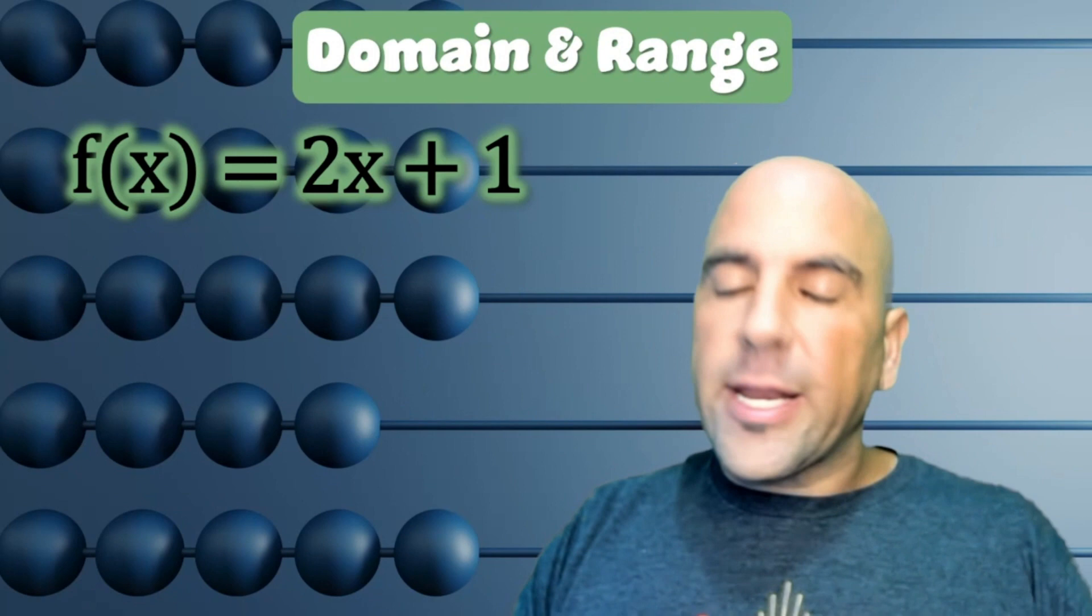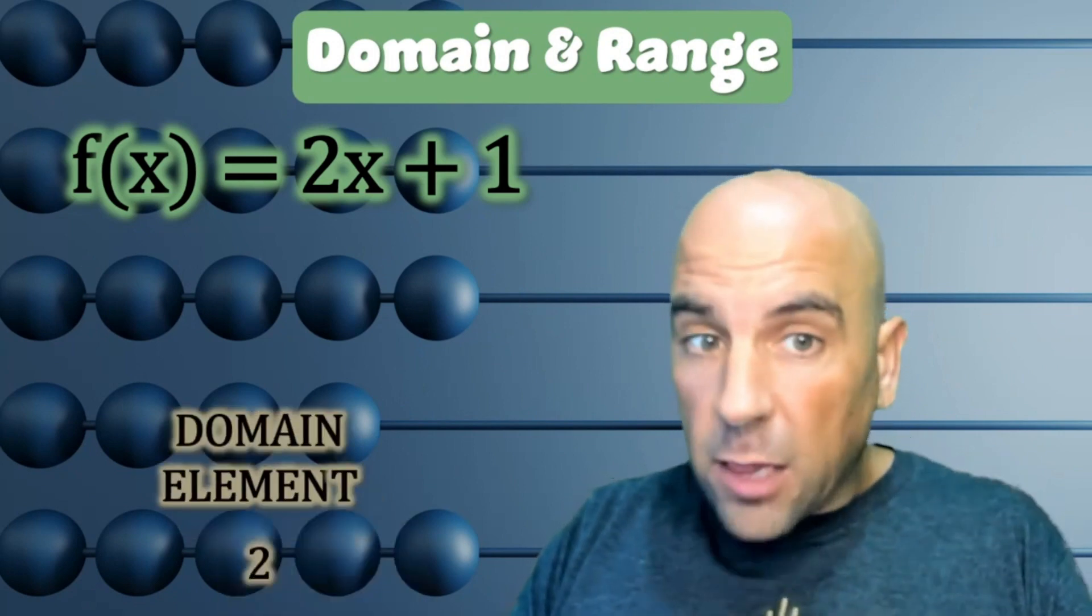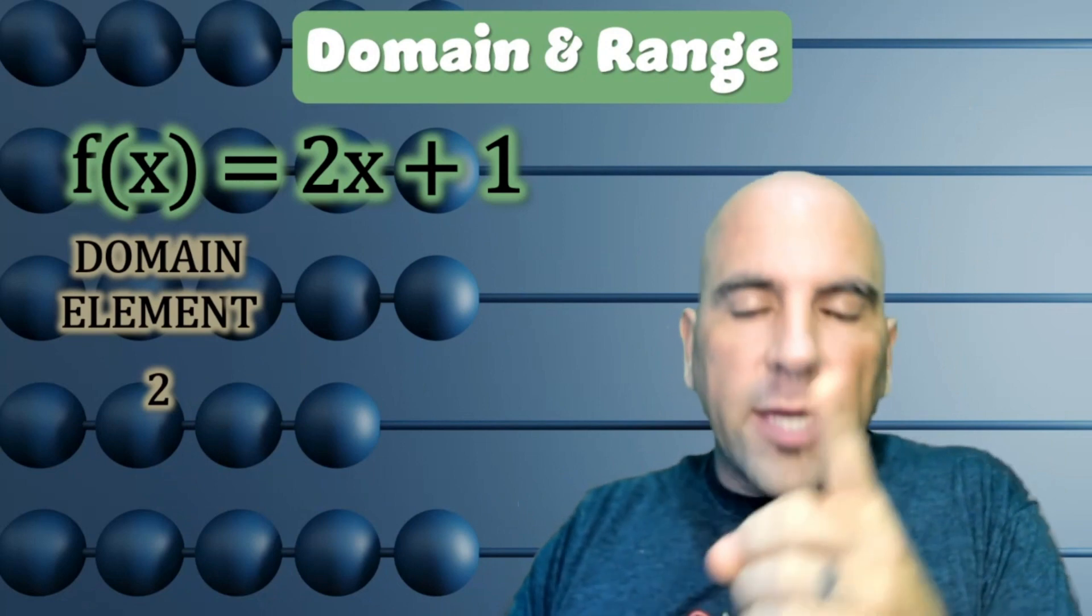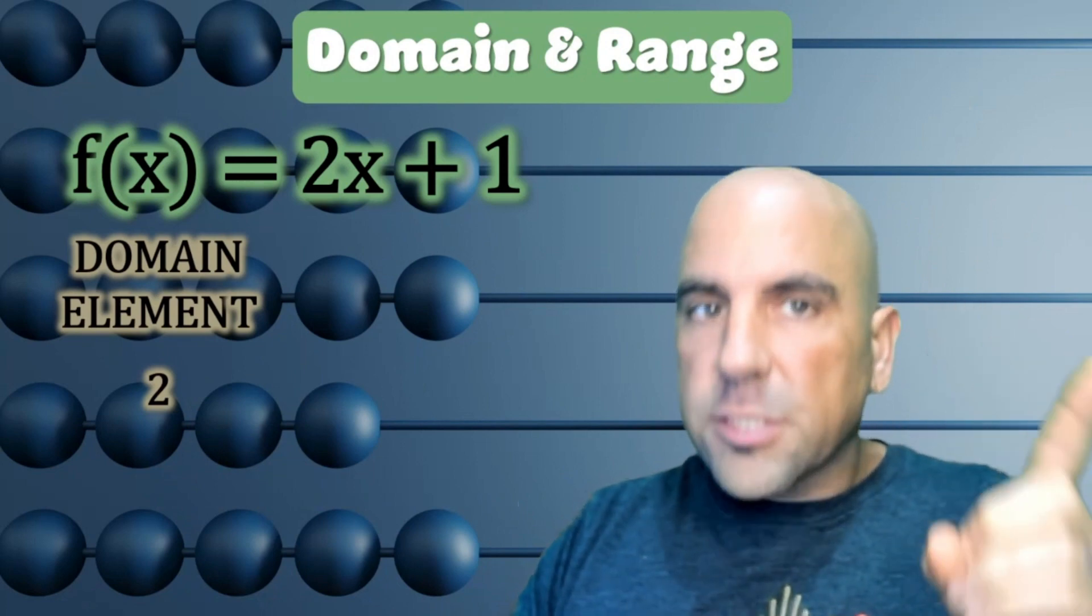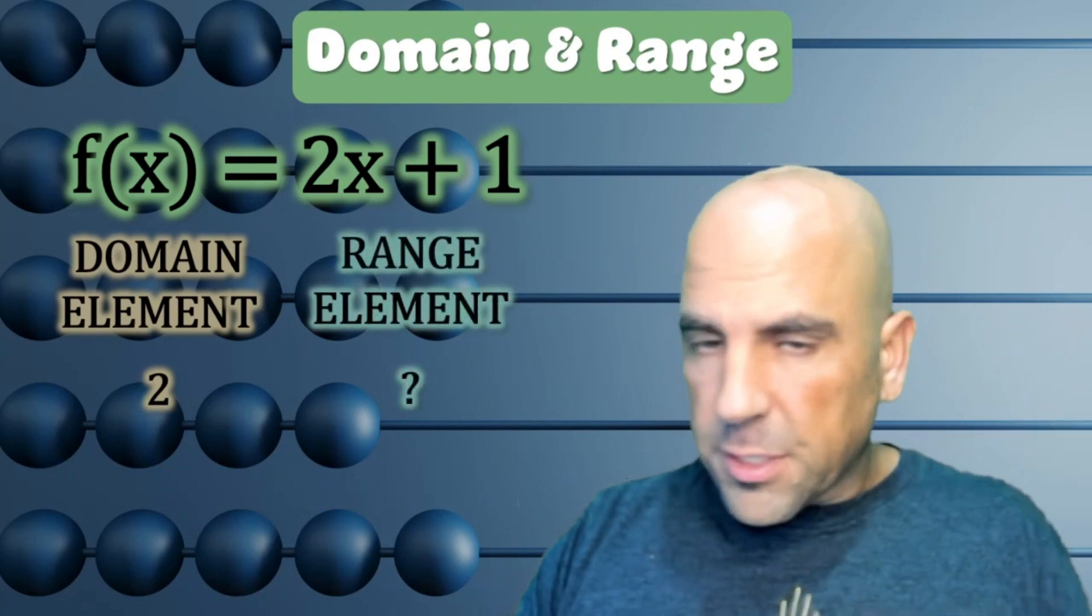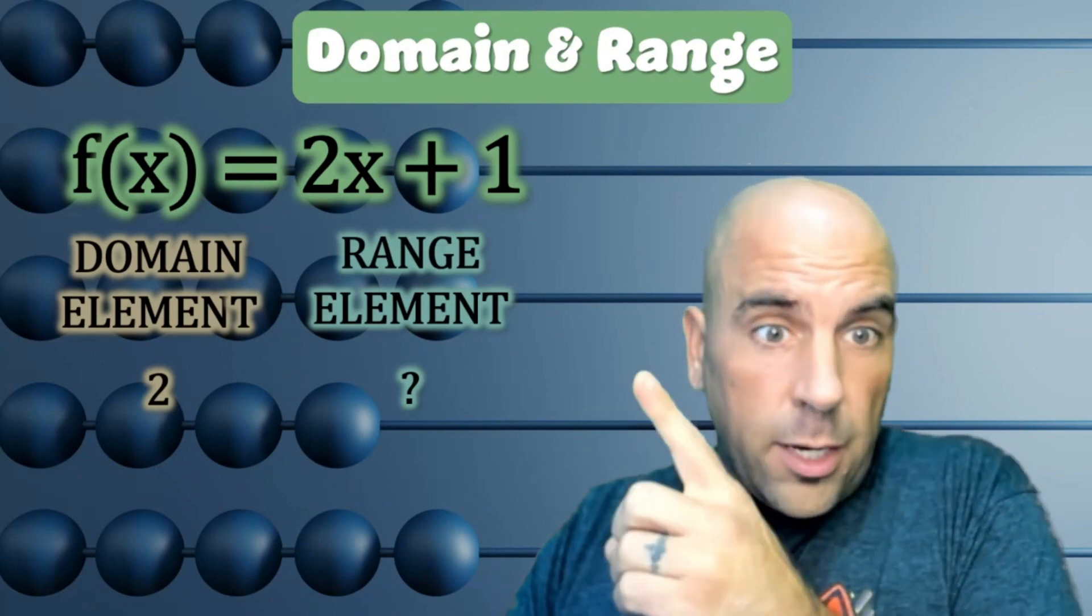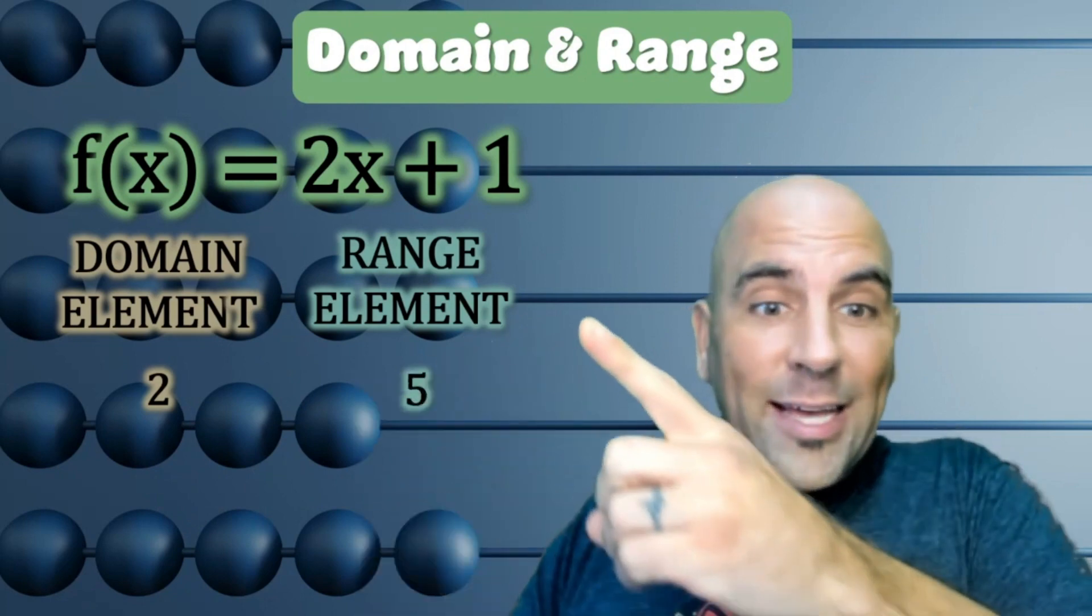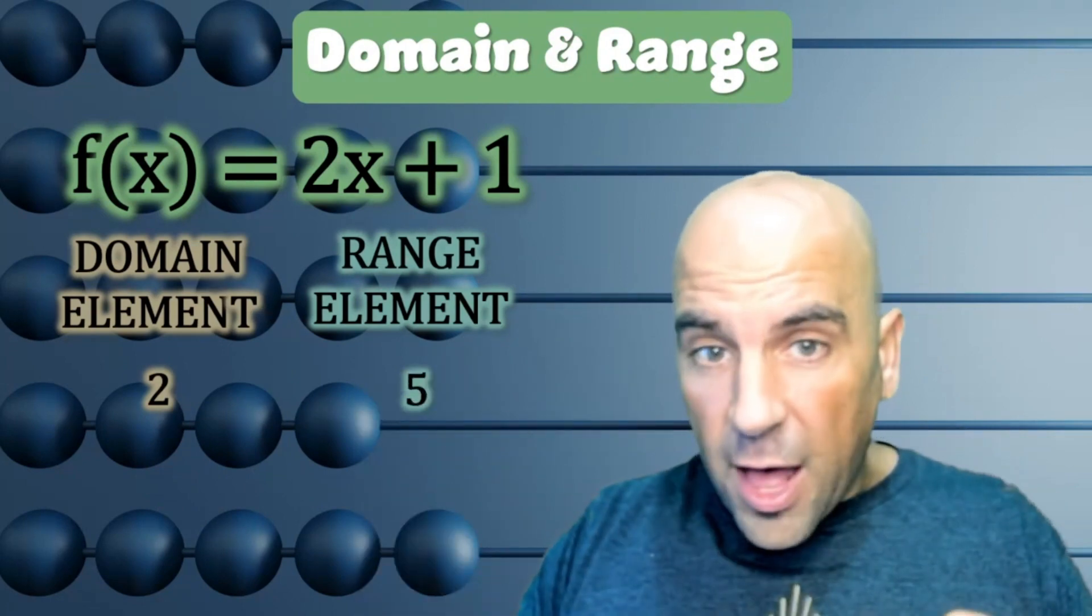Let's try this function here. Now let's say we have a domain element of two. So within all of the domain, we're gonna stop at two and see what correlates for the range element in this case. So let's plug in two: two times two is four, plus one is five. So when the domain hits two, the range is going to hit five.